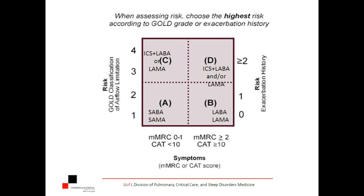Coming back to the current GOLD 2013 criteria — we talked about 2007 and looking at different severities in spirometry and how to treat those. Here's how it breaks down now: the mildest form is class A — very low symptom score, mild or moderate COPD, very few exacerbations — a short-acting bronchodilator like a short-acting beta agonist or a short-acting muscarinic antagonist like ipratropium is perfectly fine. Slide over to class B — few exacerbations, still mild or moderate, but having more symptoms — start thinking about a long-acting beta agonist or long-acting muscarinic antagonist.